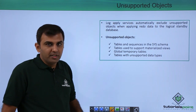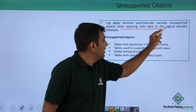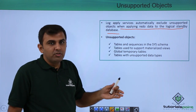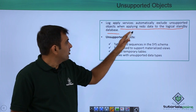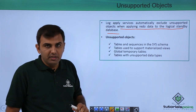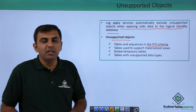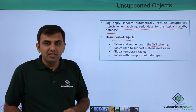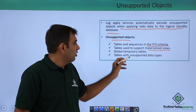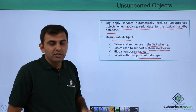First is unsupported objects. The log apply service automatically excludes unsupported objects when applying redo data to the logical standby database. Unsupported objects include tables and sequences in the SYS schema, tables used to support materialized views, global temporary tables, and tables with unsupported data types.